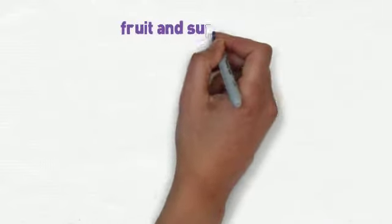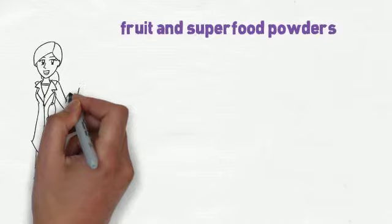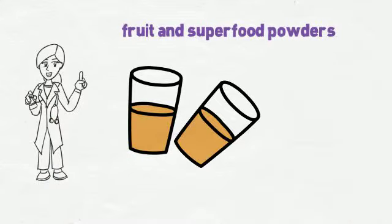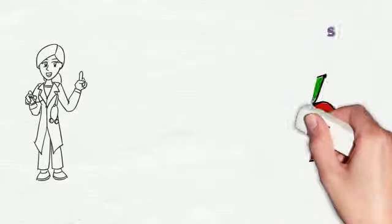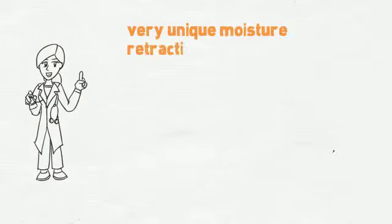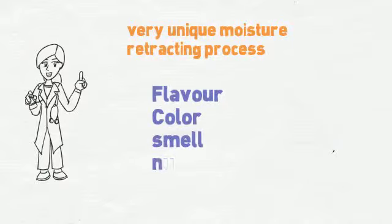What's also wonderful is that the method used to produce these fruit and superfood powders is done in such a special way that it avoids any loss of nutrition from the original fruit. This is done by using a very unique moisture-retracting process, which retains all of the natural flavor, color, smell, and nutrients found in the fresh fruit.